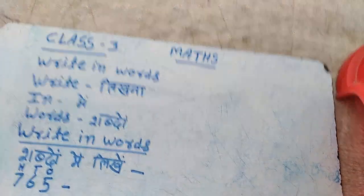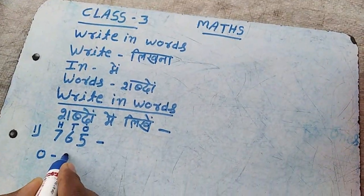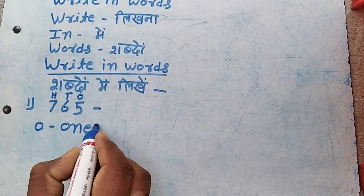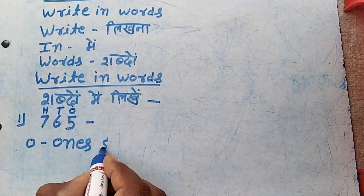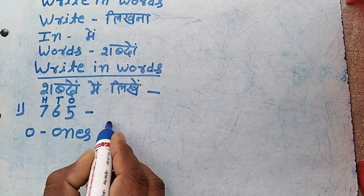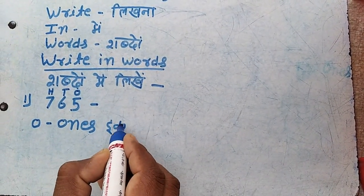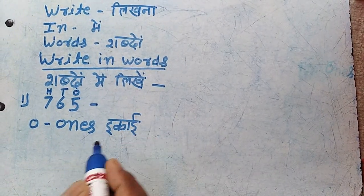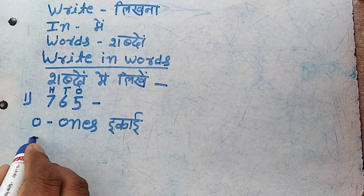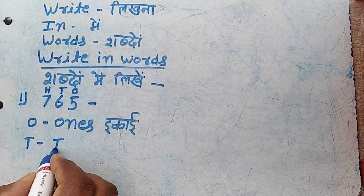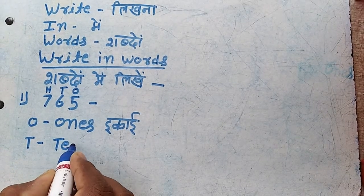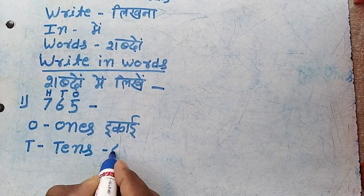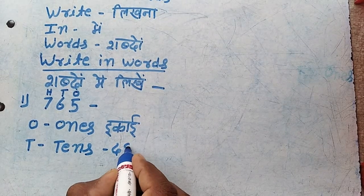O means ones — O-N-E-S. Once means ones. T means tens — T-E-N-S. Tens means dahay (tens place).